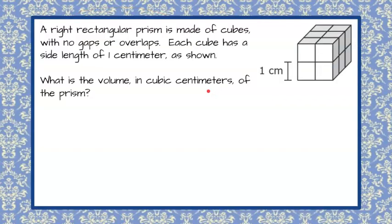Here's your question. A right rectangular prism is made of cubes with no gaps or overlaps. Each cube has a side length of one centimeter as shown. What is the volume in cubic centimeters of the prism?